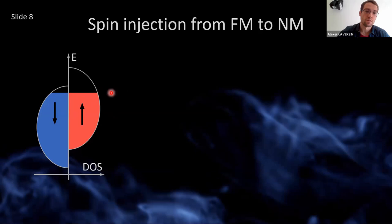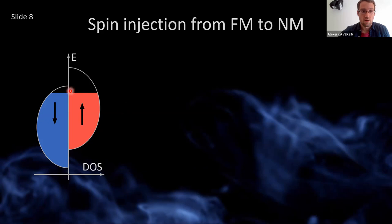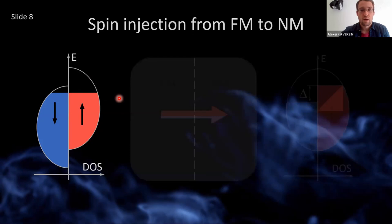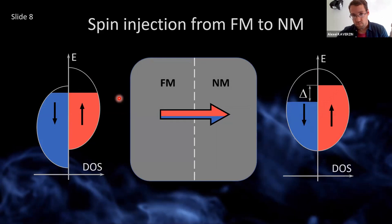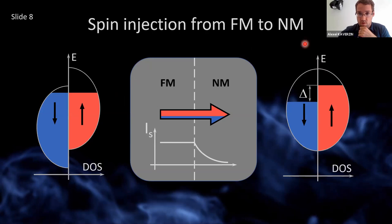There will be more electrons with spin up compared to spin down. If I pass charge current through such a material, it will address mostly electron states close to the Fermi level. If I connect this ferromagnet to a non-magnetic material and pass a charge current, when it enters the non-magnetic material, it cannot immediately drop the spin polarization. So the spin signal will penetrate into the non-magnetic material and decay exponentially. This is the mechanism by which spin accumulation is built up — a non-equilibrium difference in the chemical potentials between spin up and down.